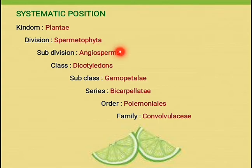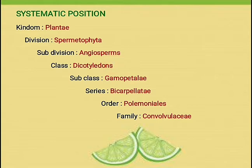Next, sub-division Angiosperms, that means closed seed plants. Next class, Dicotyledons, that means two cotyledons are present in the seed. Taproot system is present. Flowers are tetra or pentamerous, mode of venation is reticulate. Next subclass, Gamopetalae, that means petals are fused.